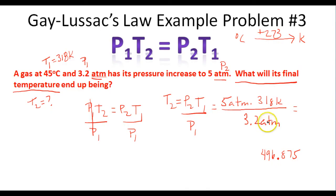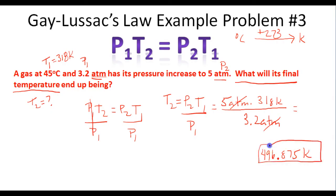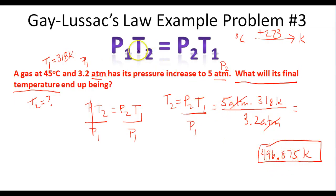The atmosphere units cancel, leaving Kelvin. The final temperature ends up being 496.875 K. That makes sense — as the pressure increases from 3.2 to 5 atmospheres, the temperature increases from 318 to 496.875 K. Since the pressure is not quite doubling, the temperature is not quite doubling either. This is Gay-Lussac's Law — I hope this was helpful.